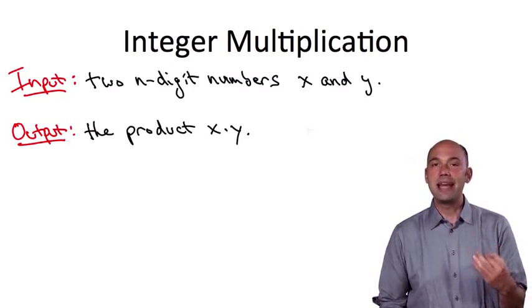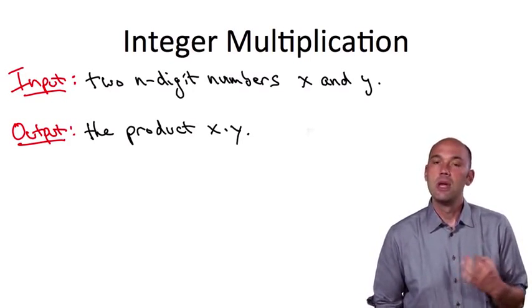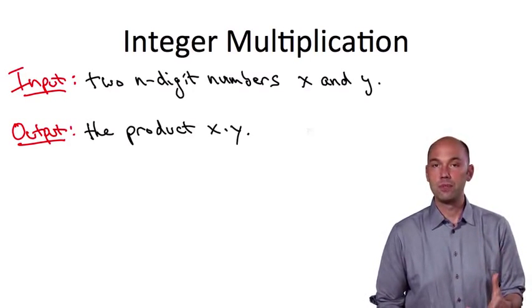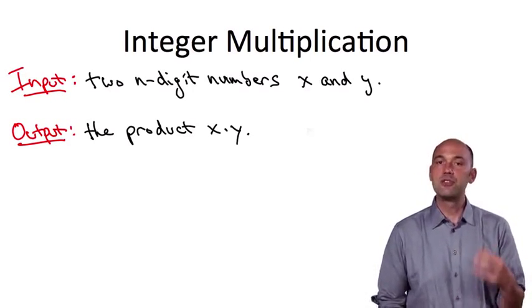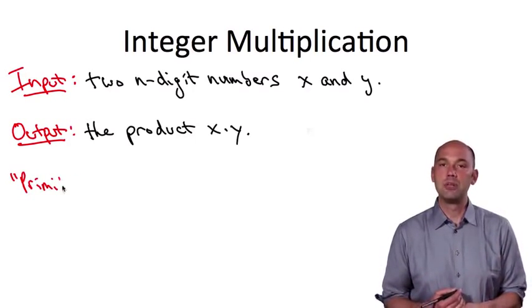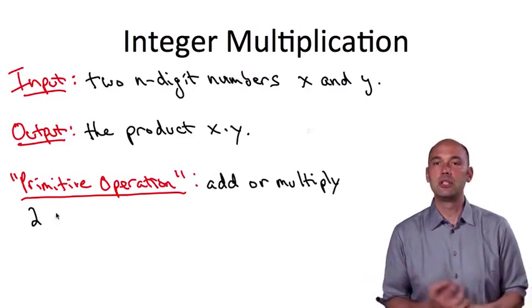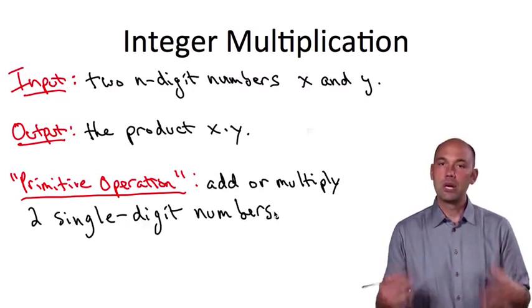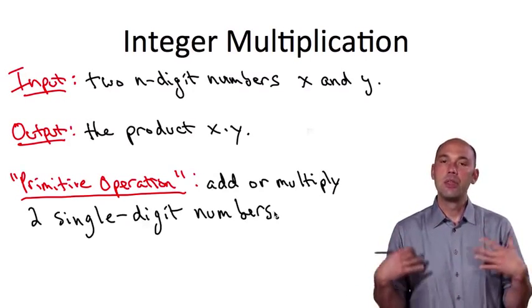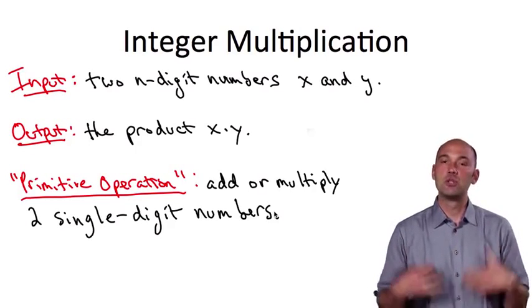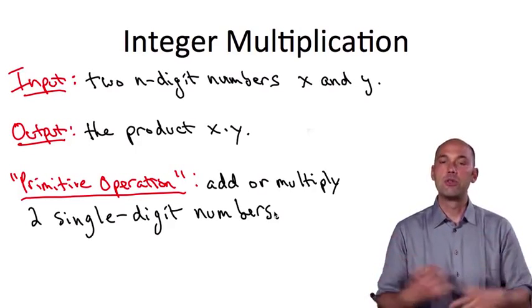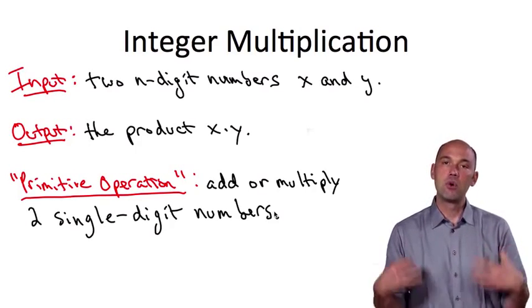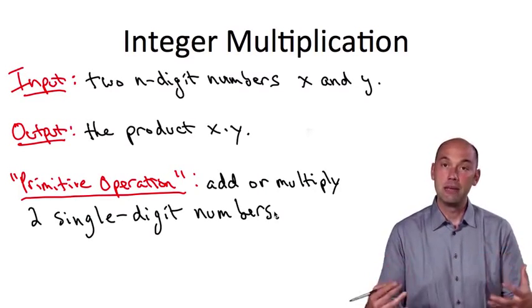The way we will assess the performance of this algorithm is through the number of basic operations that it performs. For the moment, let's think of a basic operation as simply adding two single digit numbers together or multiplying two single digit numbers. We're going to count the number of these basic operations performed by the third grade algorithm as a function of the number n of digits in the input.